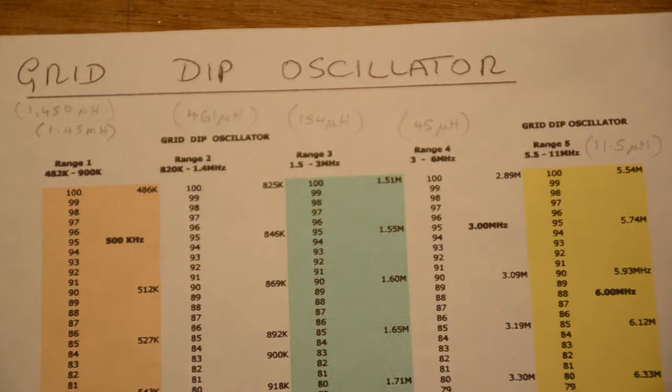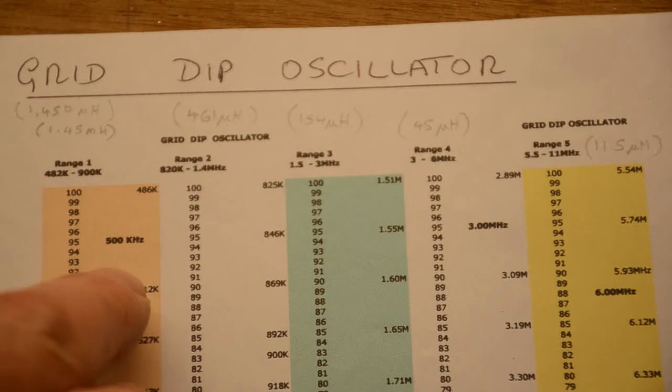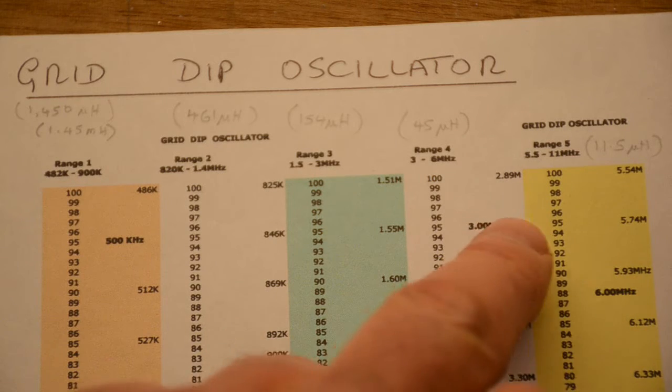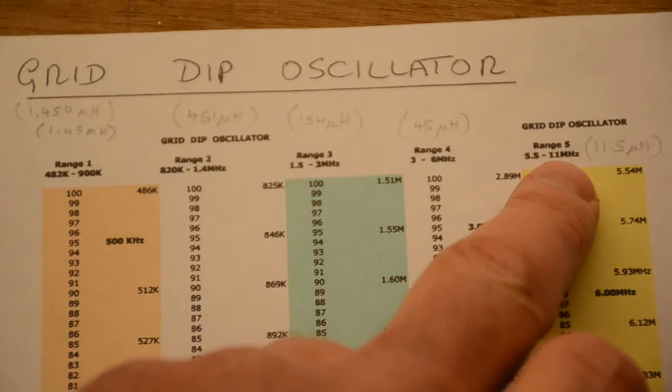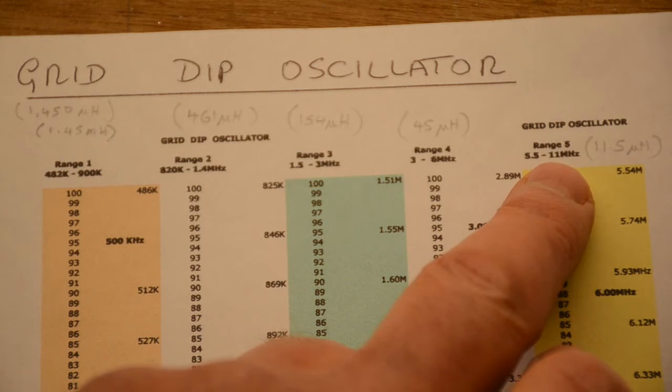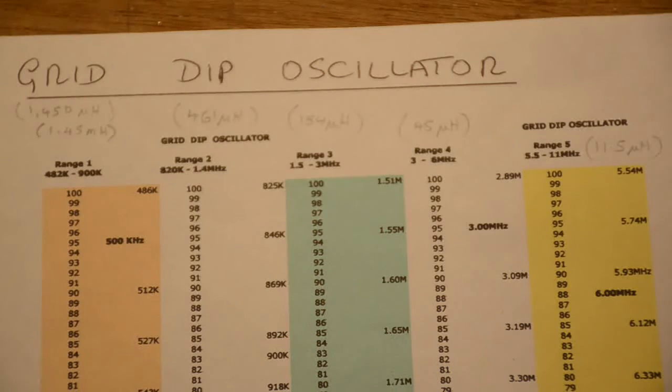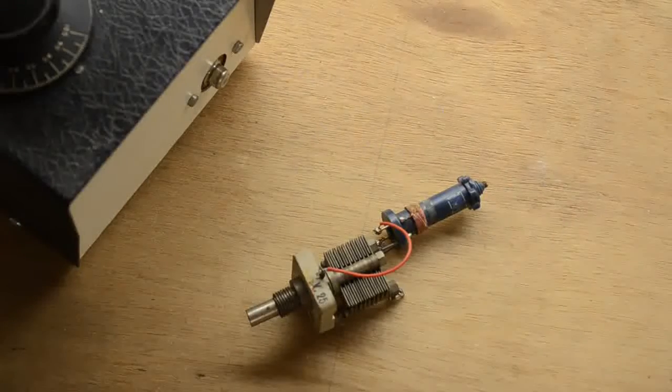For my GDO I wanted some low frequencies since that's what I was interested in. We're starting below 500 kilohertz and the top end is only about 11 megahertz. There would be no problem changing this; you simply add more coils and add an extra line to the calibration chart.